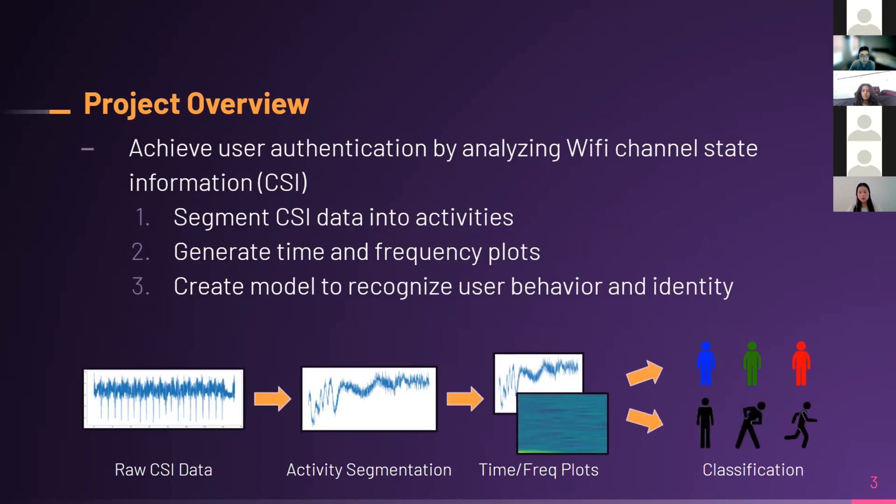Then we generate the time and frequency domain plots. For the frequency domain plots, we use a spectrogram, and then we create the model. For the model, we feed the time and frequency domain plots as inputs. The model is trained such that it is able to learn from these plots and classify activities and users based on the input given.